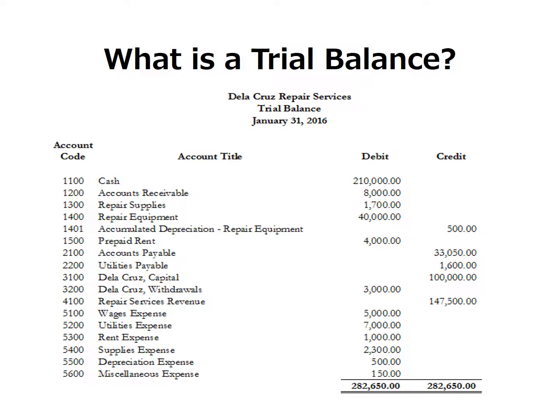This is an example of a trial balance. In a typical trial balance, there should be a heading. A heading is composed of the business name, trial balance, and a date, which is usually the end of the month. A trial balance is a list of accounts with their respective balances, taken from their respective ledgers.